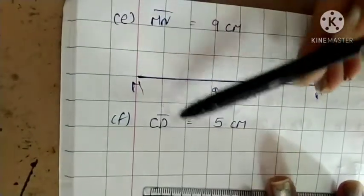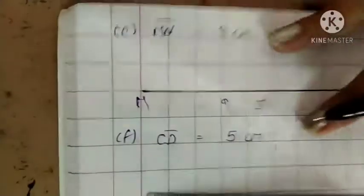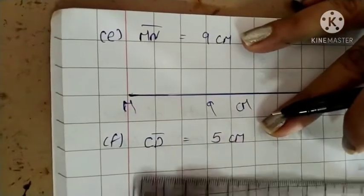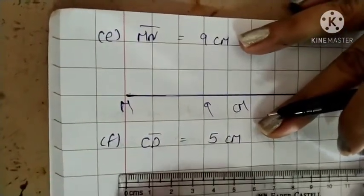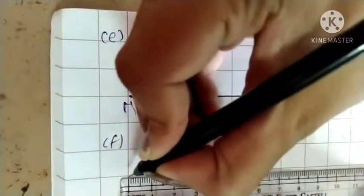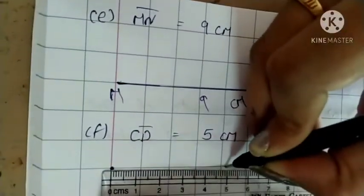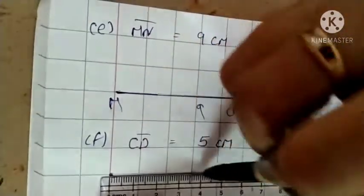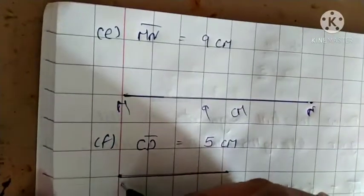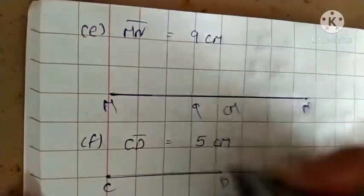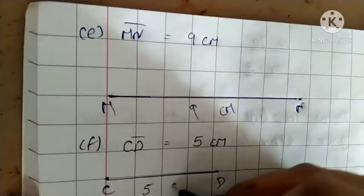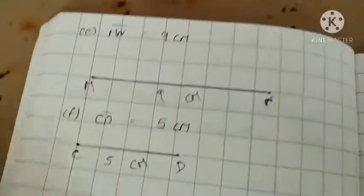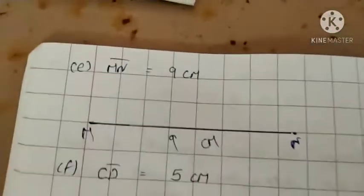Now, number d. Line segment pq equals to 2 centimeter. You have to draw 2 centimeter. So always start from where? First point we will make where? First we will make at 0. And second one we will make at 2. 2 point made. Now, join these two. Such a small one is 2 centimeter. Here at first point p, second q. And in center what will we write? 2 centimeter. So this is d. Now, next one. Our next one is the e. Mn equals to 9 centimeter. So you have to draw Mn how much? 9. So take the scale. First point where will we make? Zero. And second point. Nine is told, so wherever nine is written in scale, there. Dot made, now join both. What name will we give to these two? Mn. So first point M, second N, and 9 centimeter.